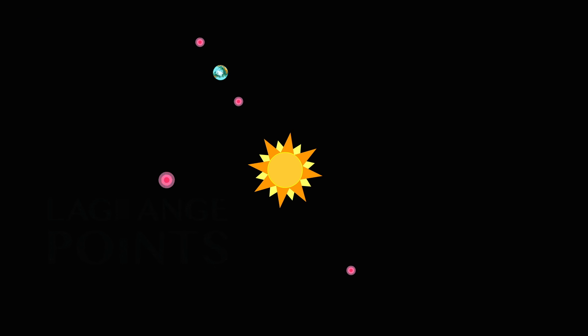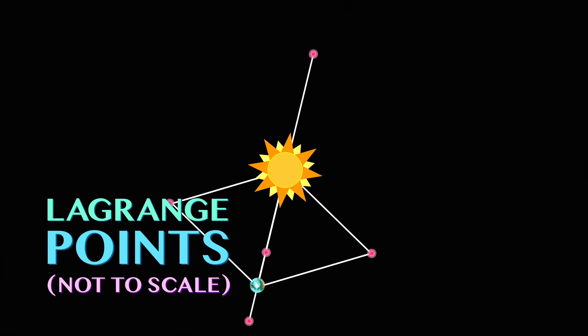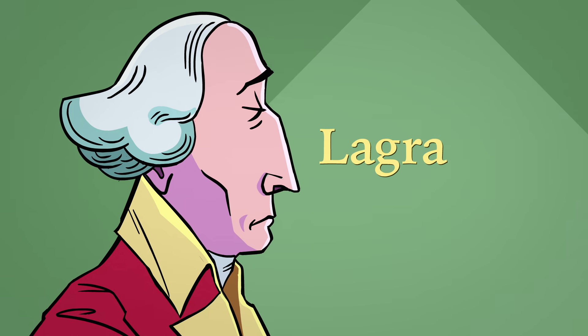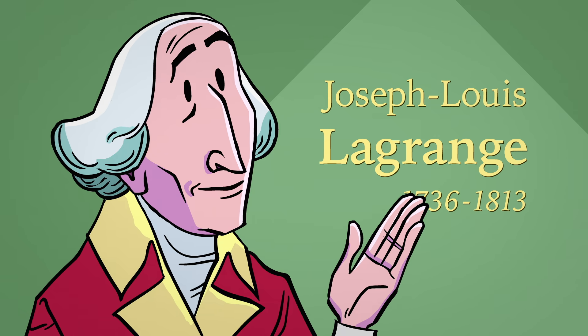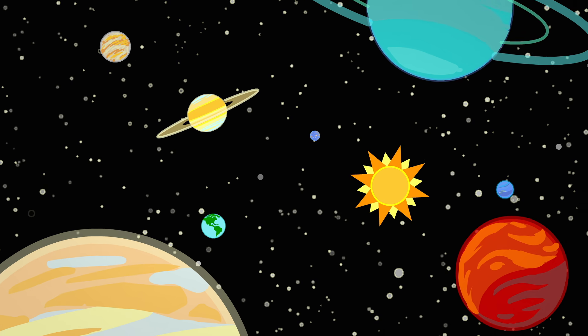Each of these dots is a Lagrange point, and as far as human space exploration is concerned, they may be the most important places in our solar system. Named after the 18th century mathematician who deduced their positions, Lagrange points are rare places of equilibrium in our constantly shifting universe.